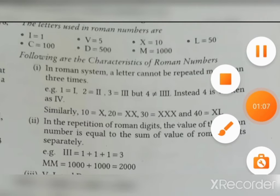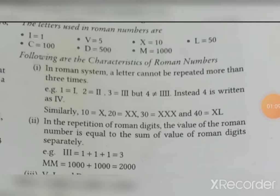Second rule is the repetition of Roman digits, the value of the Roman number is equal to the sum of the value of Roman digits separately. III is 1 plus 1 plus 1 equals 3. MM is 1000 plus 1000 equals 2000.